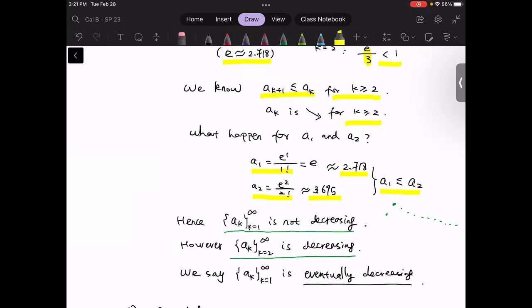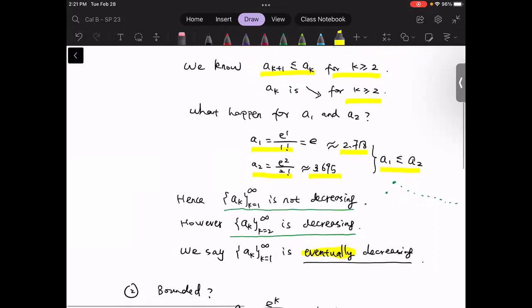You can say this sequence starting from k equals two is actually decreasing. Indeed, we call this one to be eventually monotone. More specifically, it's eventually decreasing. This is some information that I would like you to point out. So this is for the monotonicity.